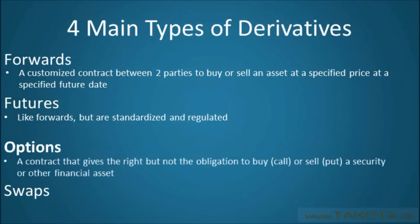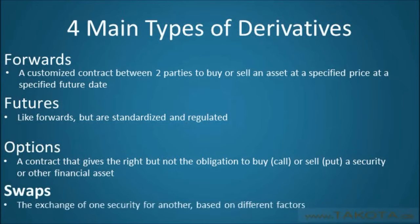An options contract is a contract that gives the right, but not the obligation, to buy (call) or sell (put) a security or other financial asset. Finally, a swap is fairly self-explanatory and refers to the exchange of one security for another based on different factors.